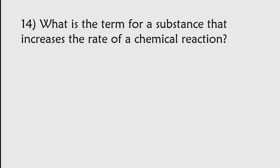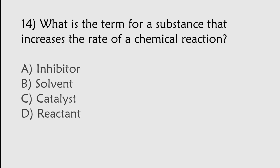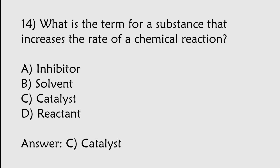What is the term for a substance that increases the rate of a chemical reaction? Inhibitor, Solvent, Catalyst, Reactant. The correct answer is option C. Catalyst is the term for a substance that increases the rate of a chemical reaction.